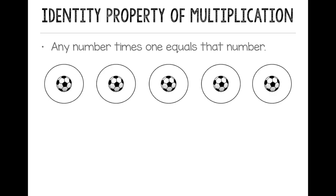This also works if we have 5 groups of 1. Then I would have 5 times 1, and I still have a product of 5. So anytime you multiply by 1, your product is going to be the other number.